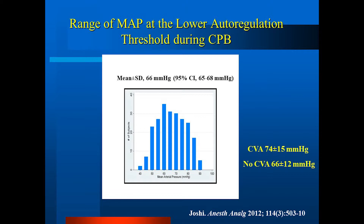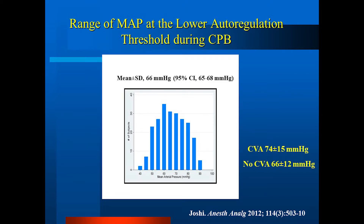When we look at patients who went on to have a stroke postoperatively, their LLA cutoff was about 74, whereas those without a CVA was about 66. This speaks to the fact that when we empirically manage blood pressure during bypass, we're really guessing what is the correct blood pressure to keep above the lower limit of autoregulation. We cannot predict it based on demographic data or preoperative blood pressure. We need to monitor it if we're going to be precise.